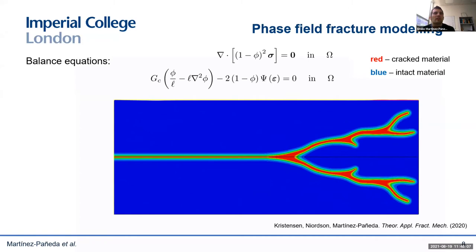For example, in this slide you can see crack branching due to the application of dynamic loading. Red colors denote areas where the phase field equals one — that is, cracks.